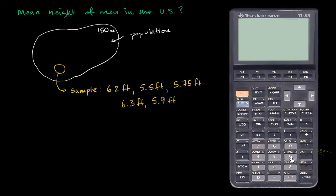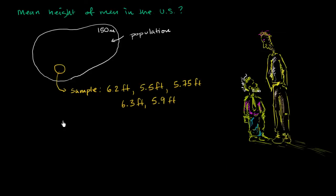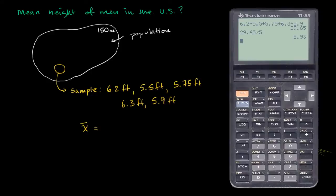Well, let's get our calculator out, and we get 6.2 plus 5.5 plus 5.75 plus 6.3 plus 5.9. The sum is 29.65, and then we want to divide by the number of data points we have, so we have five data points. So 29.65 divided by 5, and we get 5.93 feet.